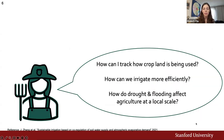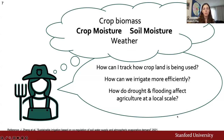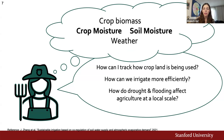In light of these issues, someone managing agricultural policy might ask questions like: how can I track how cropland is being used? Where are farmers irrigating, and how can we irrigate more efficiently? How do drought and flooding affect agriculture at a local scale? There are lots of variables that go into making informed decisions, including crop biomass, crop moisture, soil moisture, and weather. Ideally, we'd be able to understand these variables at a variety of scales — from the resolution of a single agricultural field on the order of a kilometer, up to regional and global scales. That's one application where remote sensing can come in handy, having fine resolution and comprehensive coverage.